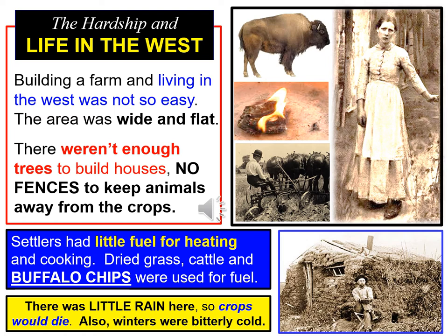People used sod — patches of grass — cut out into squares, and built their house using mud, dirt, and dry grass, mixing it together. Now, if you have a house made out of dirt and patches of grass, you have a lot of bugs, a lot of insects, and even snakes can come into that area. That's challenging.